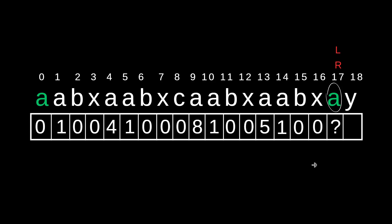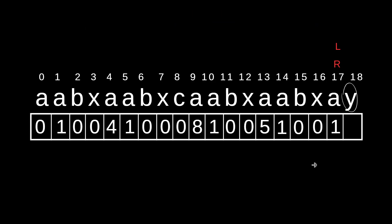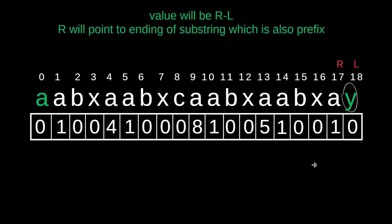Is A and A equal? Yes — R will increment. Now it is not equal. What's the value? The difference between L and R is 1. R will decrement. Then point to the next value. This character is not equal — the value will be 0. R will point to the ending of the substring. R will be less than n — that's it. This is our Z box.